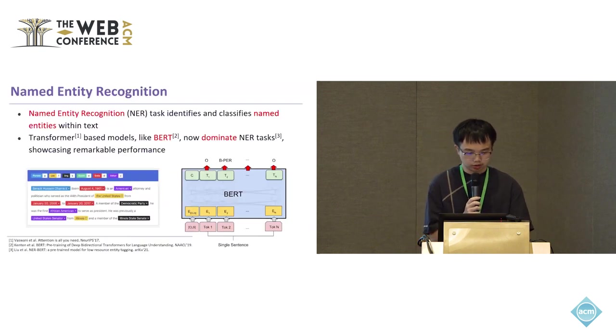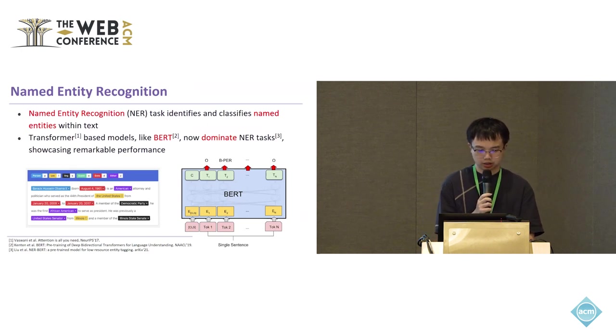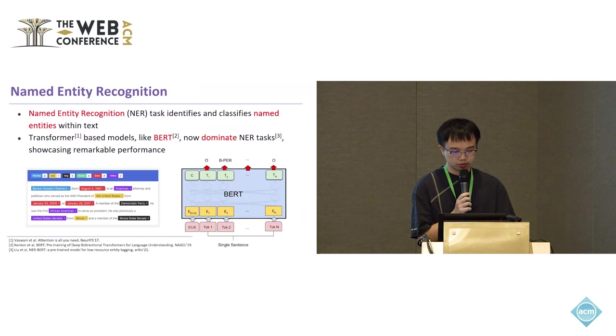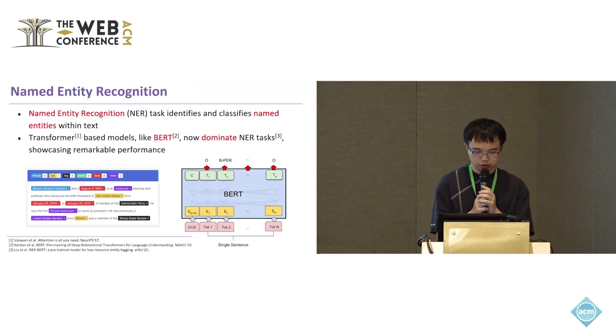Named entity recognition is a crucial subtask of natural language processing that focuses on identifying and categorizing key information—entities—in text. The entities can include names of people, organizations, locations, dates, and more. For example, you can look at this figure. Obama is a person name, and August 1, 1961 is the date.